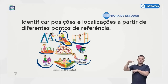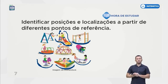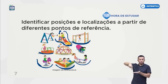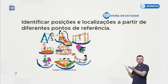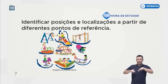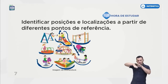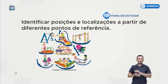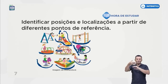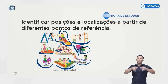Esse coleguinha está girando, mas ele está em pé, no chão, no brinquedo. Esse coleguinha já está subindo — ele não está no chão. E esse aqui, o minhocão! O que é que tem minhocão na escola? É legal passar por dentro do minhocão, né? Quando a gente vai lá por dentro, passando, a gente está dentro do minhocão. Aqui ele já saiu, ele está fora. Então a localização das pessoas depende do ponto em que nós estamos.